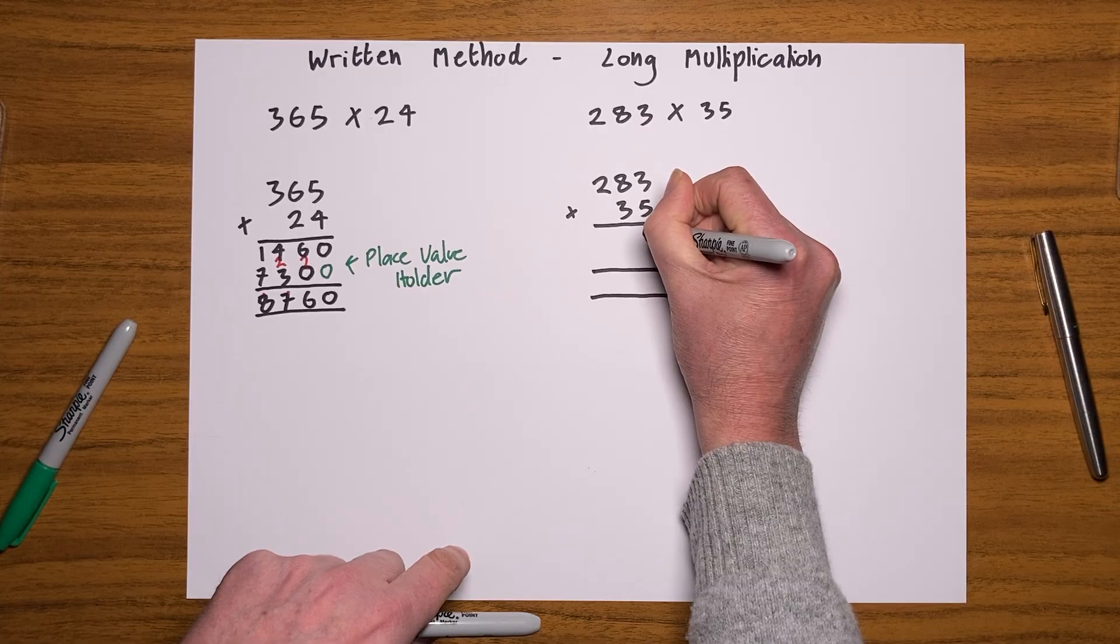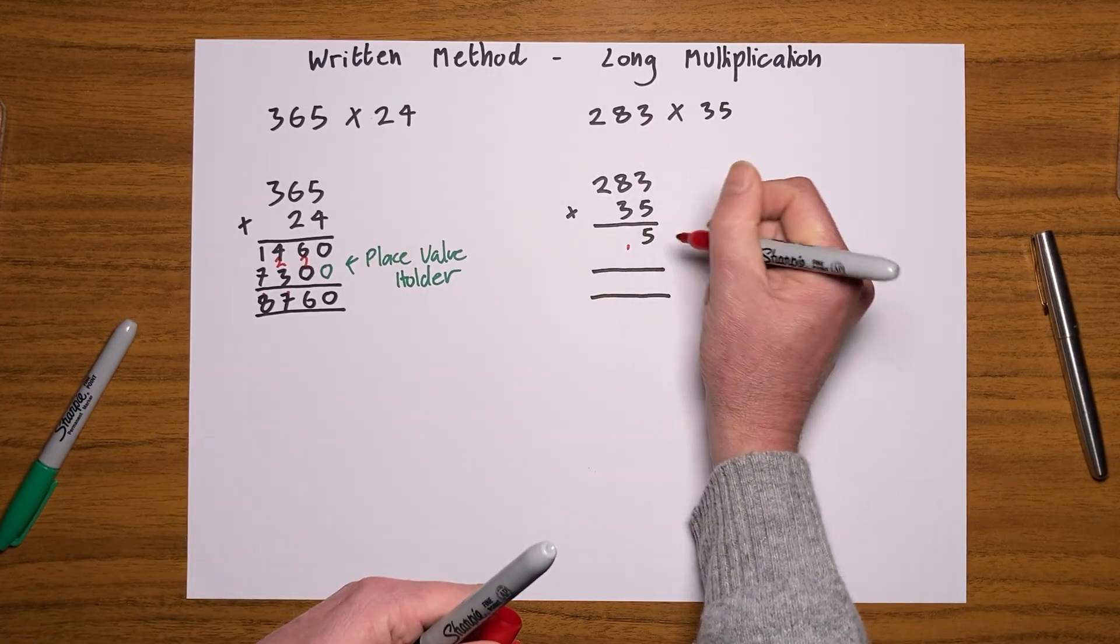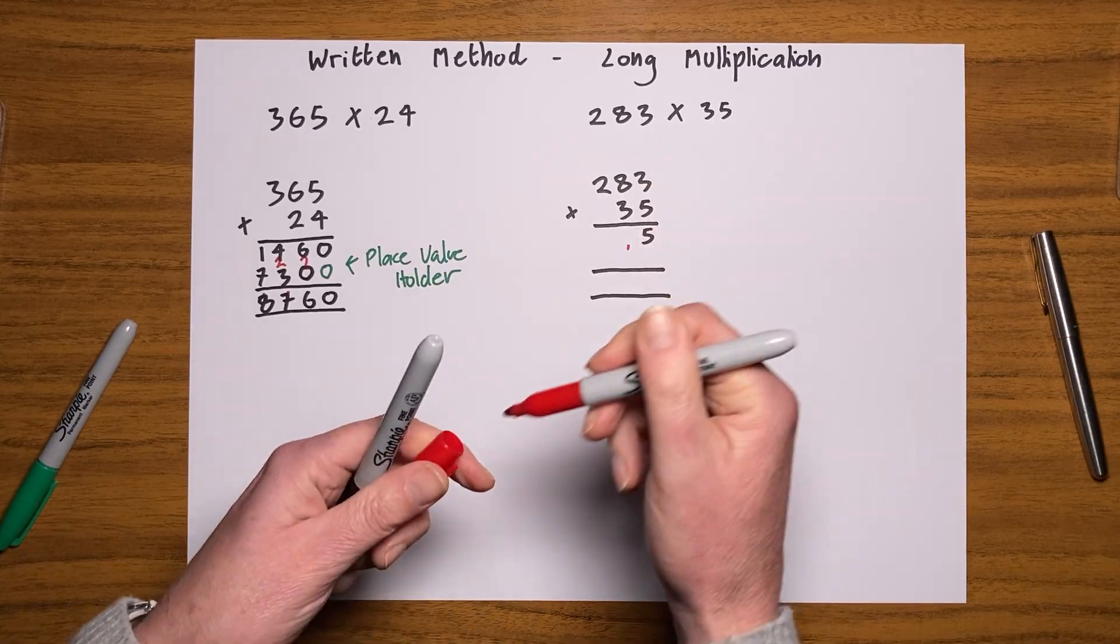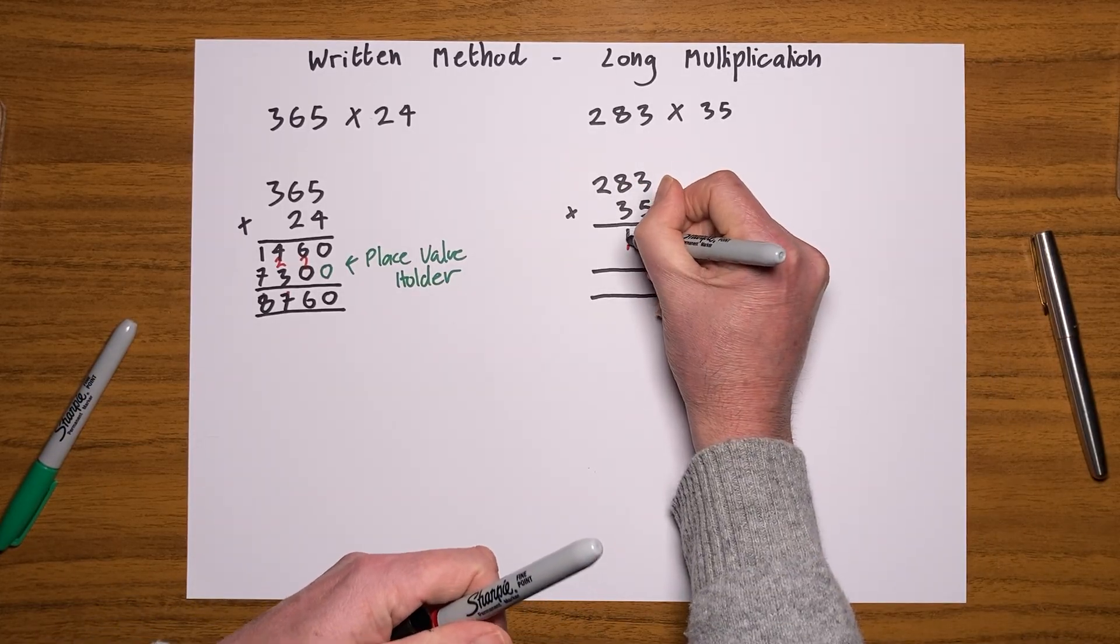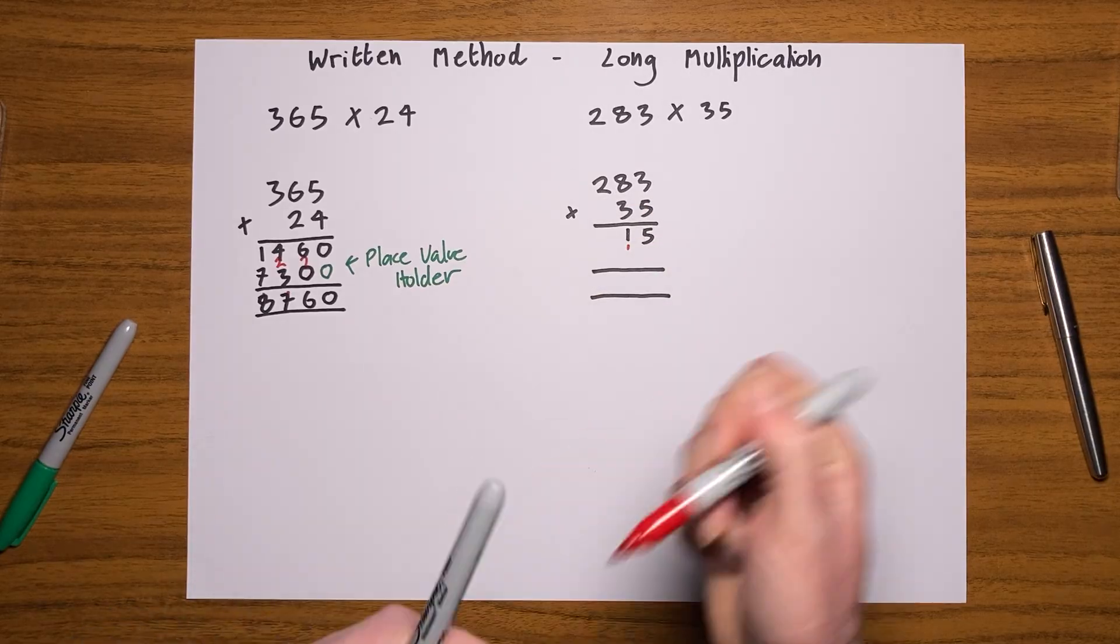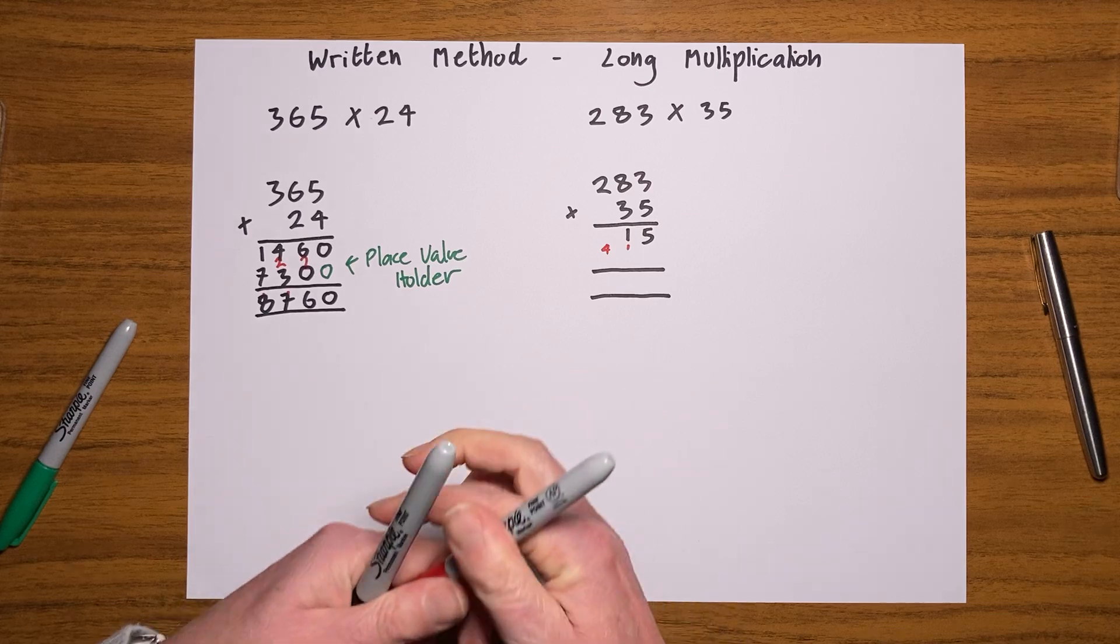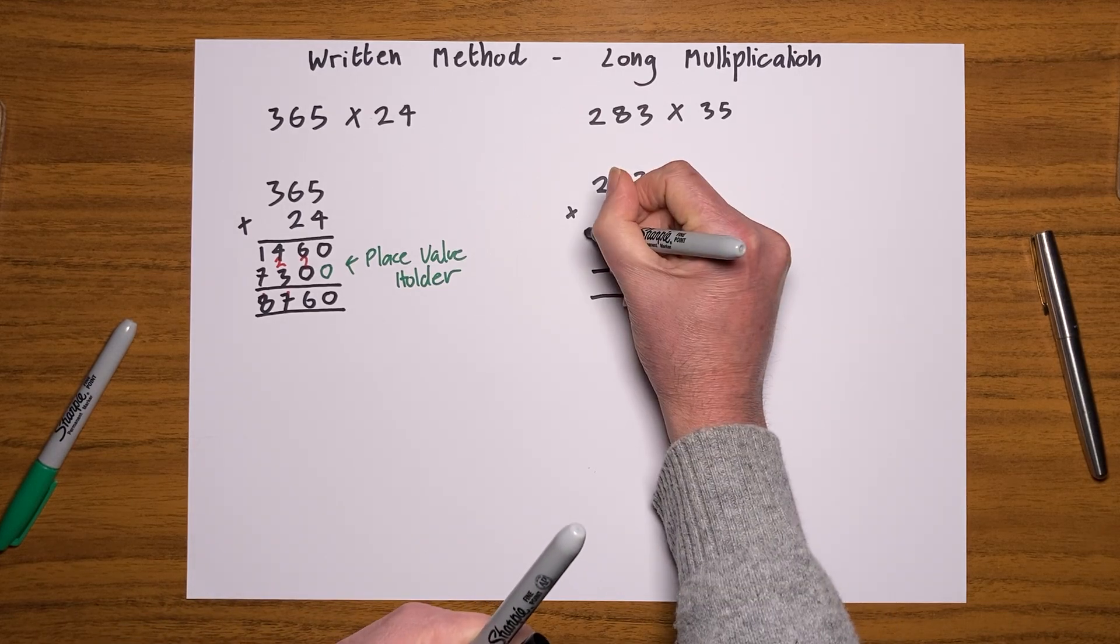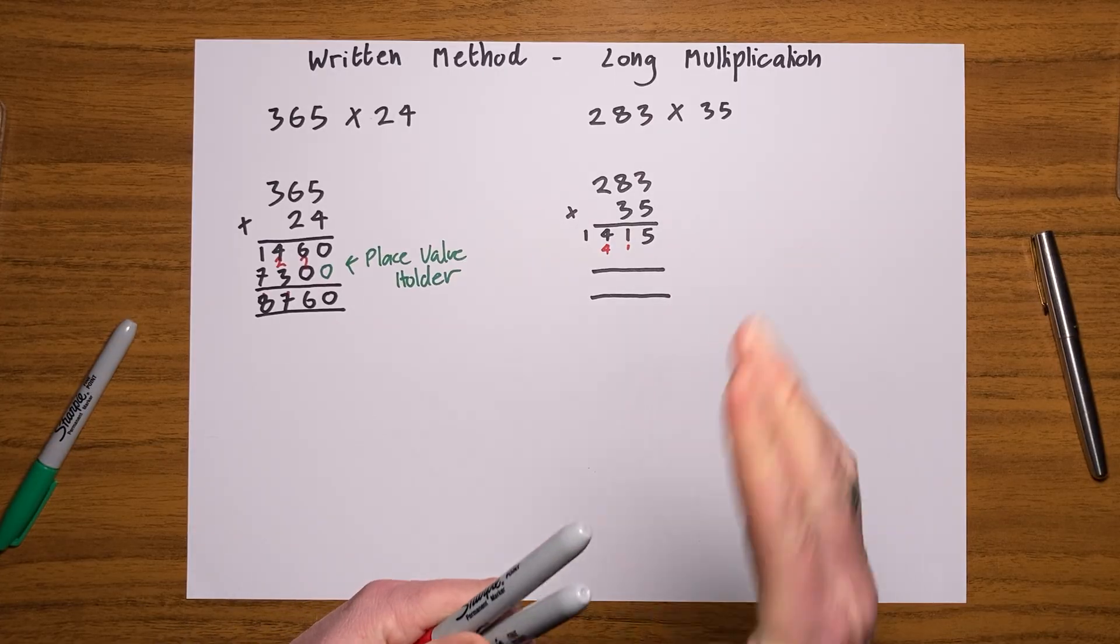So you're going to multiply 283 by the units first. Three fives are 15, carry my 10 over. Eight fives are 40, and that one is 41. Let's carry that 40 over, put it here. Five twos is 10, add that four is 14, so that's the units.